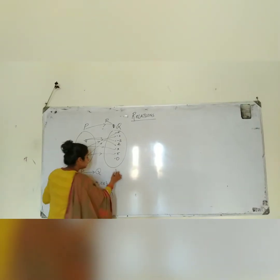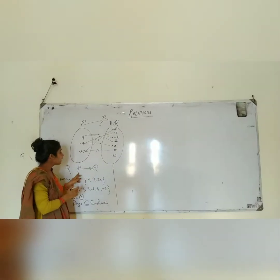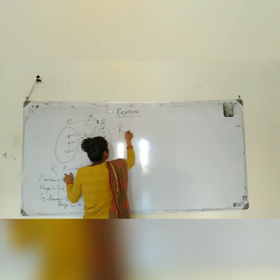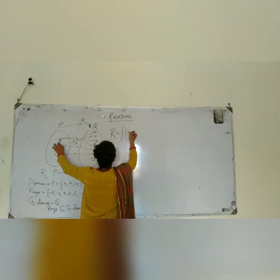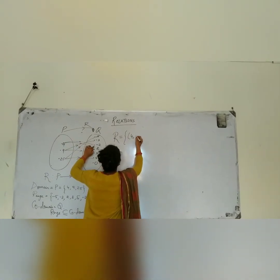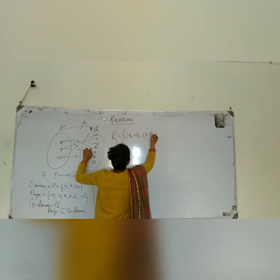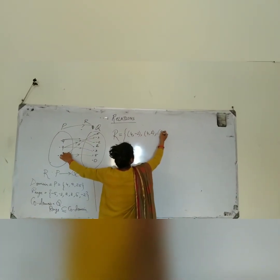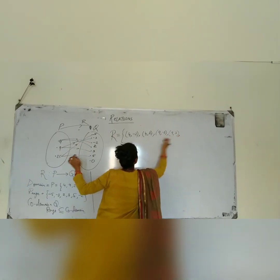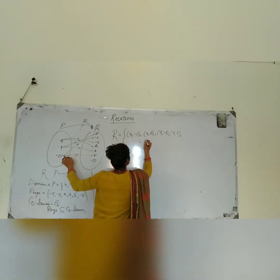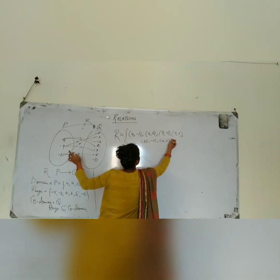Now if we write this relation R in roster form: 4 is mapping with minus 4, and 4 is mapping with plus 2. Then 9 is mapping with minus 3, and 9 is mapping with plus 3. Then 25 is mapping with minus 5, and 25 is mapping with 5.